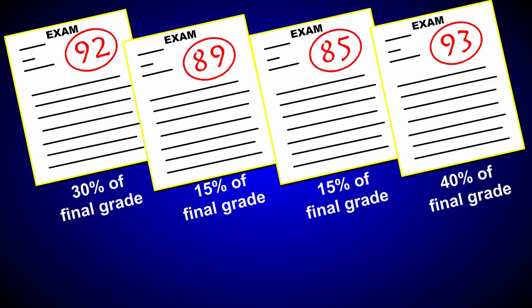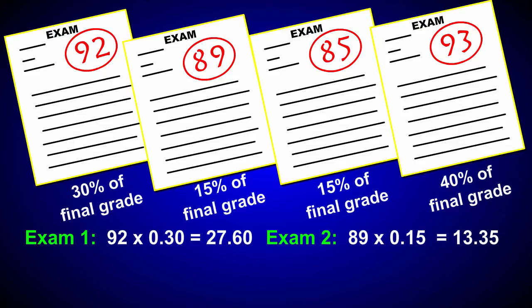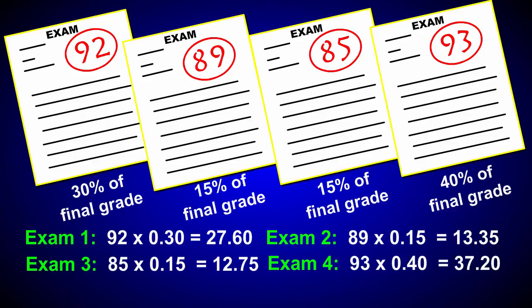To figure your final grade for biology, multiply the points you received by the percent the exam is worth. So, for exam 1, multiply 92 times 30%, or 0.30. For exam 2, multiply 89 by 15%.